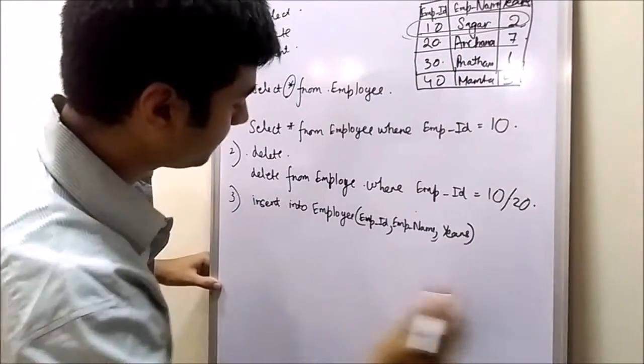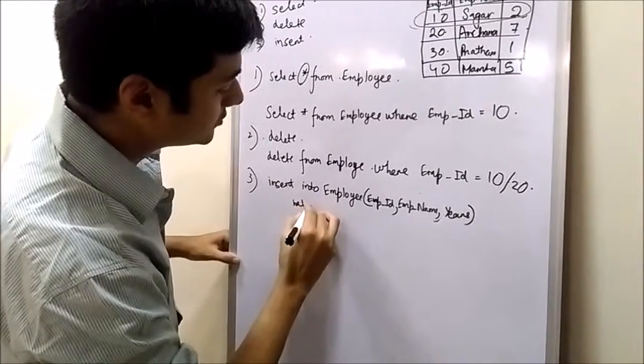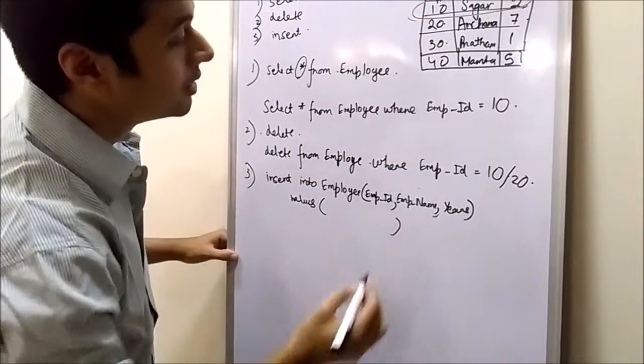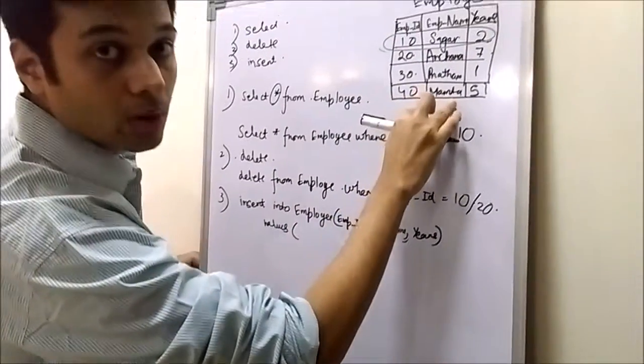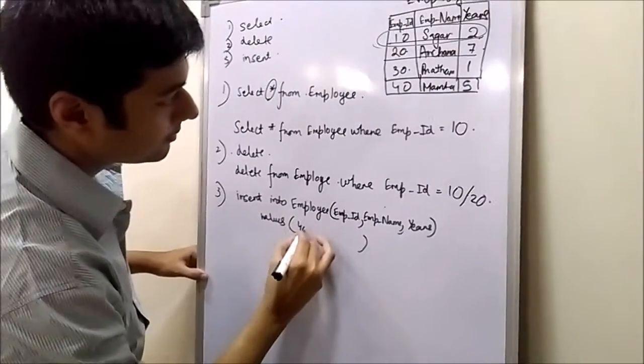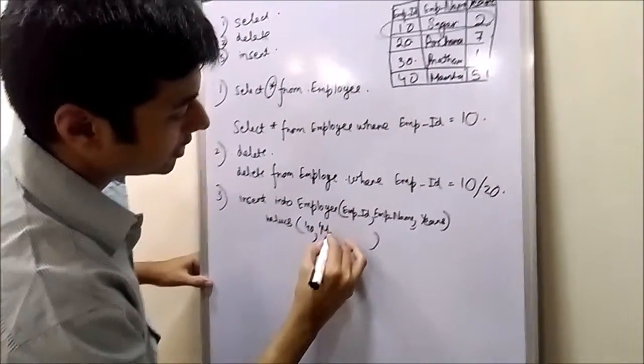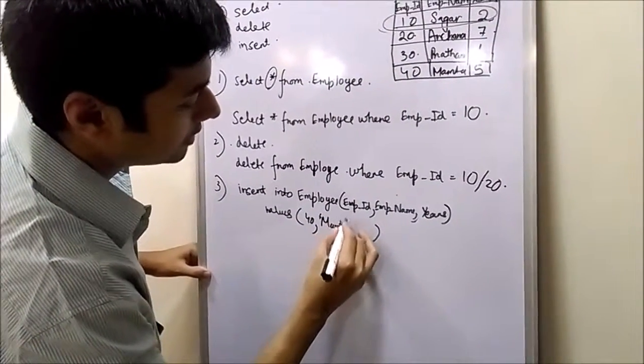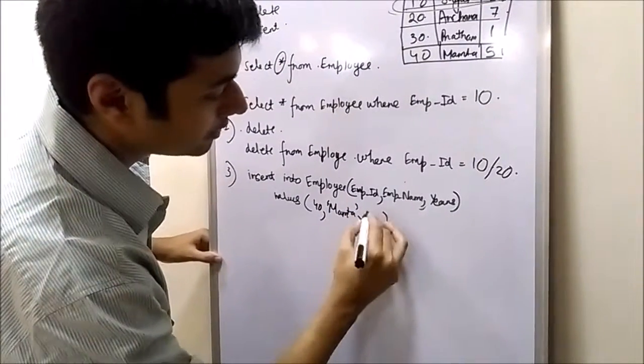Column names, values, and the bracket. We will put the values which we want to insert, like 40, Mamta - we will write Mamta in inverted commas - comma, 5.